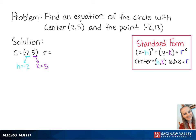Our radius is equal to the change in y from the center and the point (-2, 13). This means that the radius is equal to 13 minus 5, which is equal to 8.